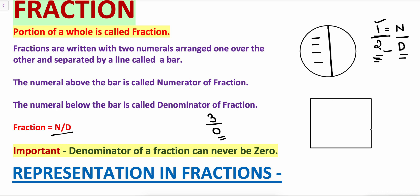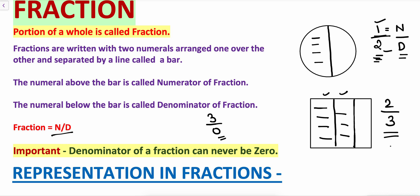Suppose I take the example of a square and if I divide the square into three equal parts and I am talking about these two portions — how will I write it in fractions? This square in three equal parts: this is one portion and this is one more portion, so it is two portions out of three portions. This is how we write it in fractions: two by three, where two is the numerator and three is the denominator.